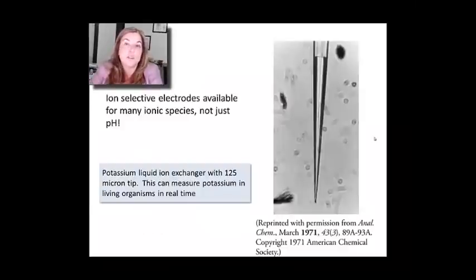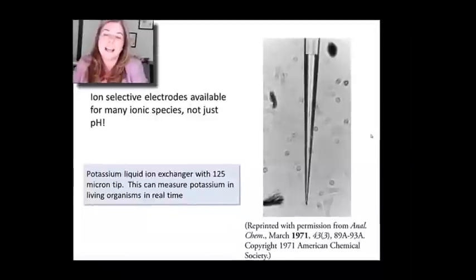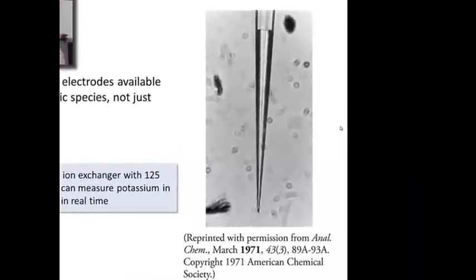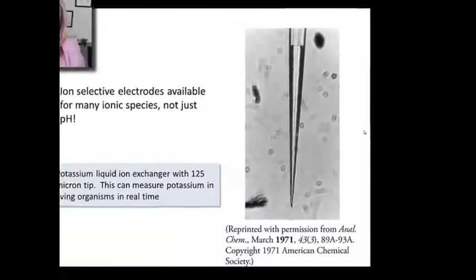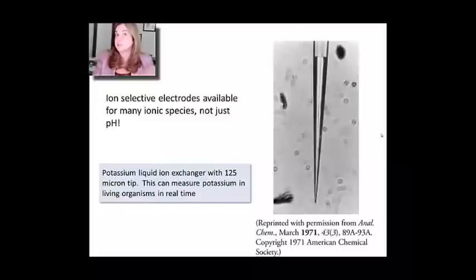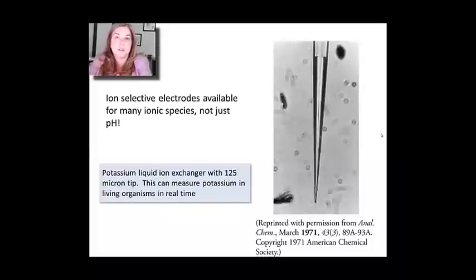Now, ion-selective electrodes, as I said, don't just have to be for pH. They can be for a lot of different things. In this case, this is a potassium ion exchange electrode, and it's very small. And so, that allows it to interact or measure, for example, potassium through tissue at very specific places. It's a little too big to do the single-cell measurements like I showed you in the last lecture. It's 125 micron tip. But, nevertheless, it can be pretty accurate in its measure of potassium. So, it's really great for electrophysiology studies, for example, in the muscles.